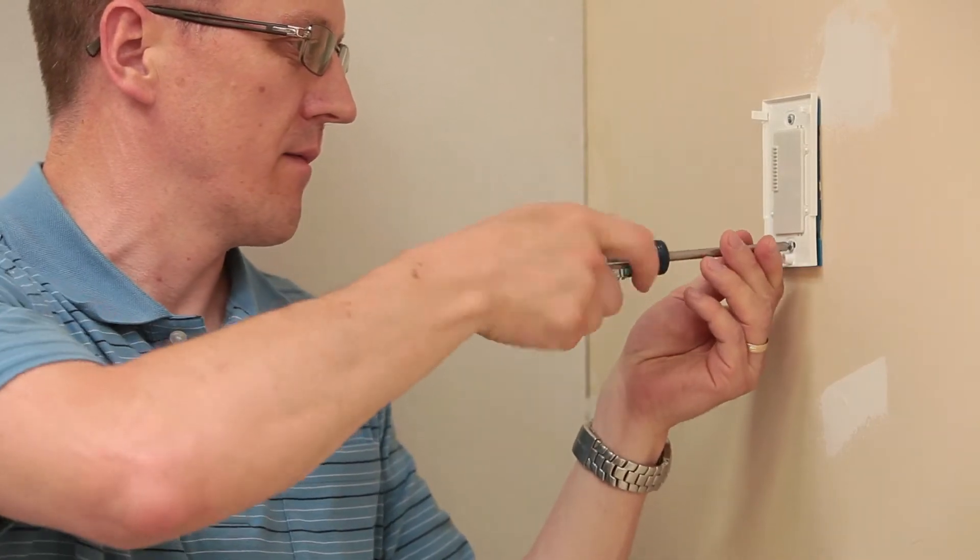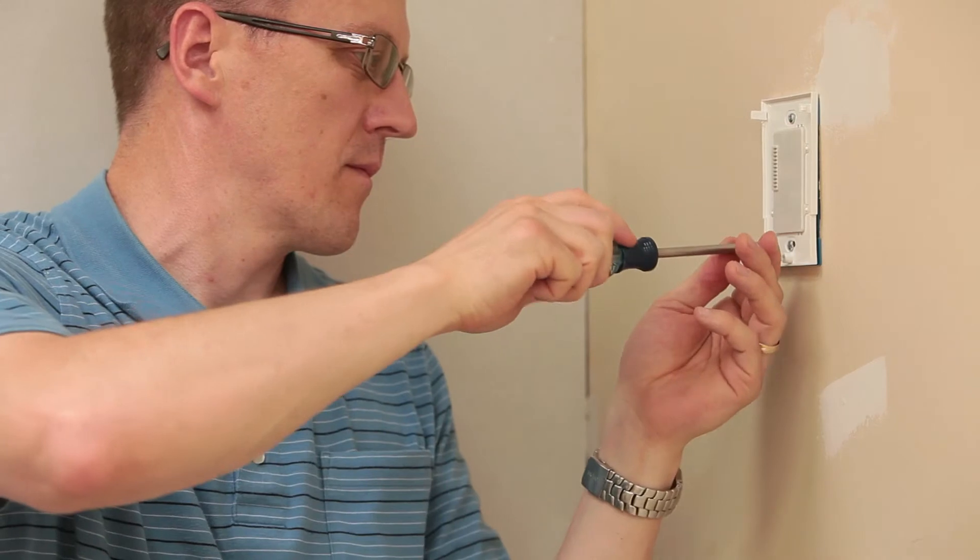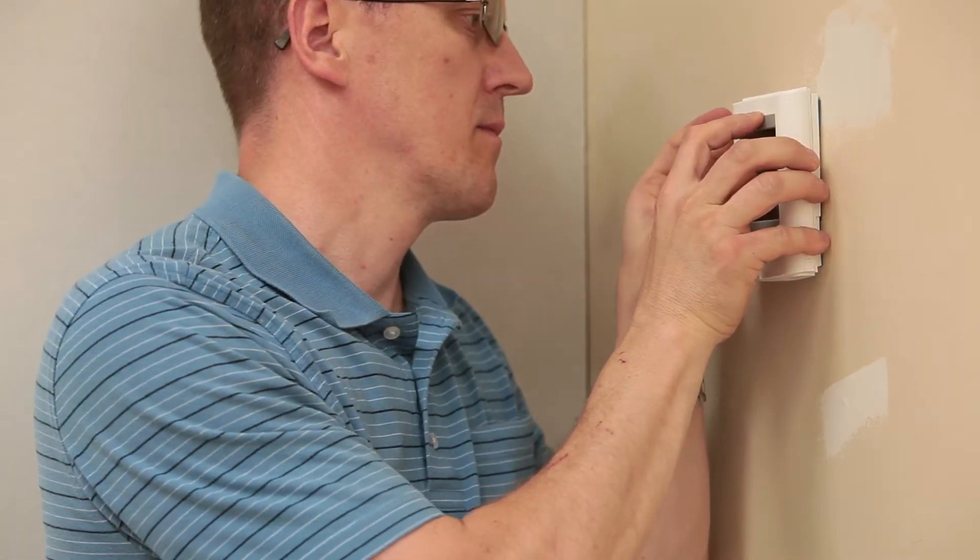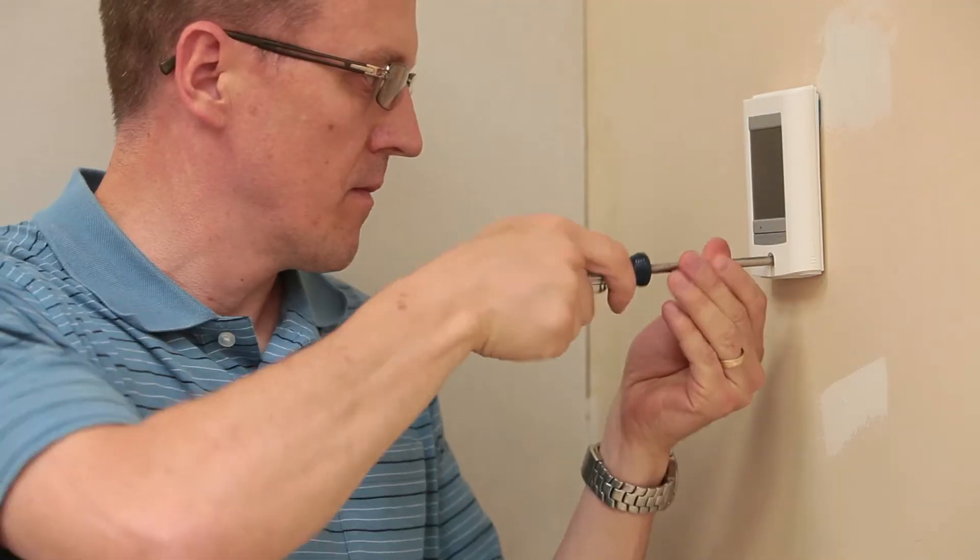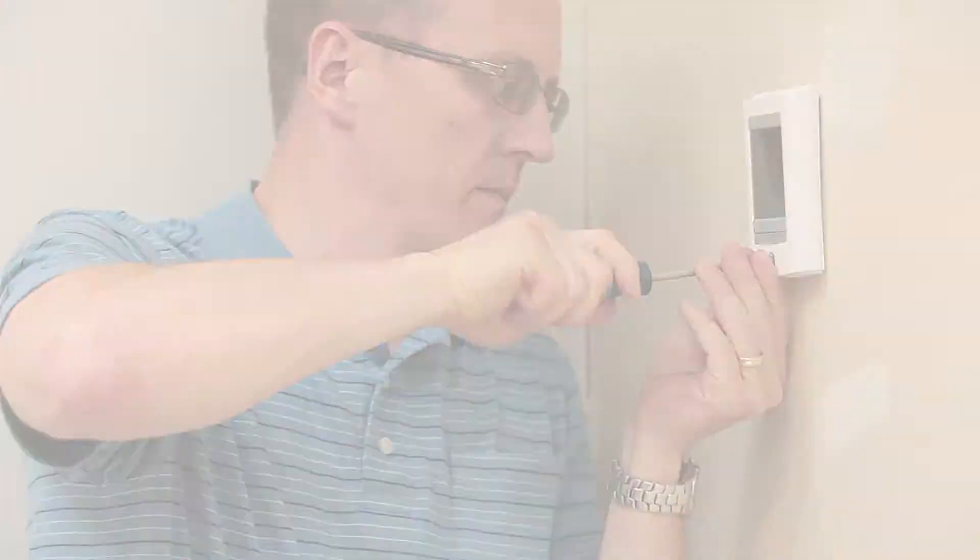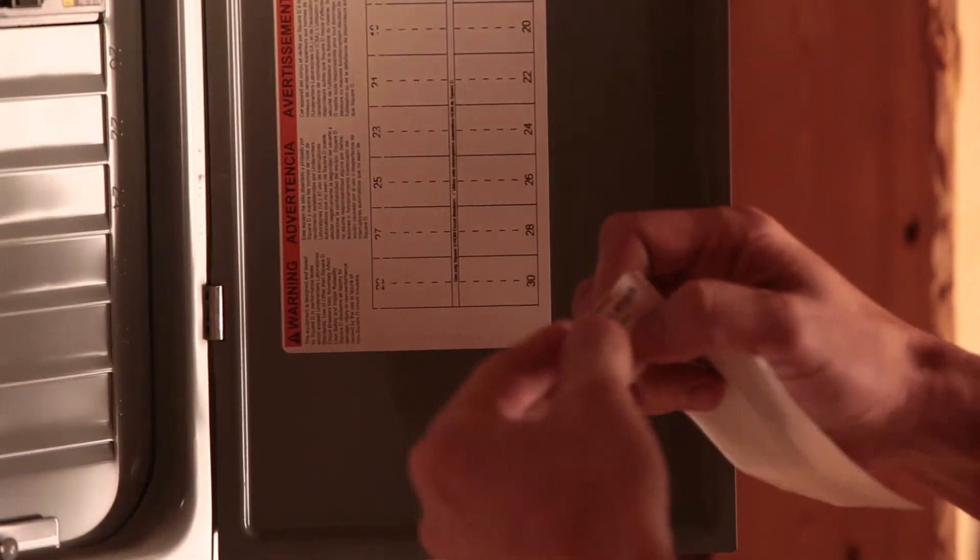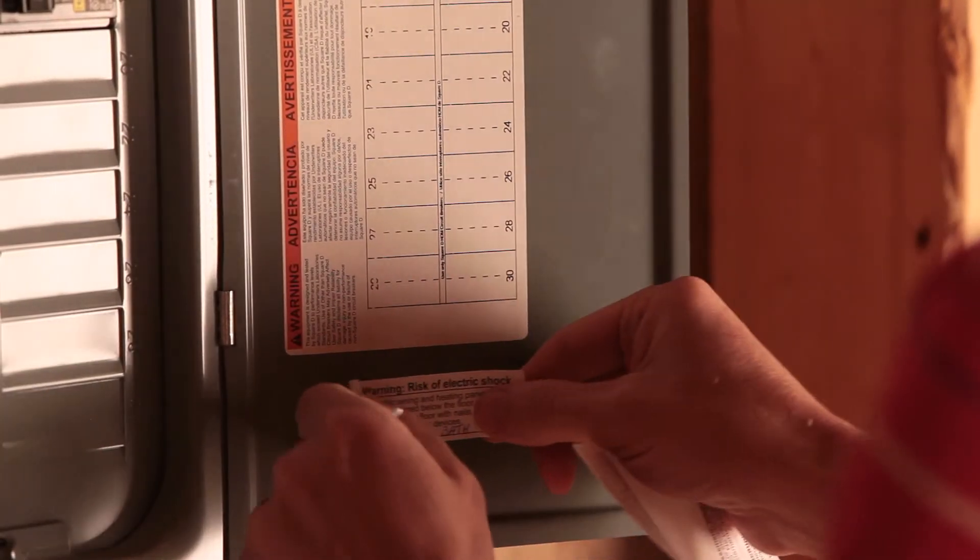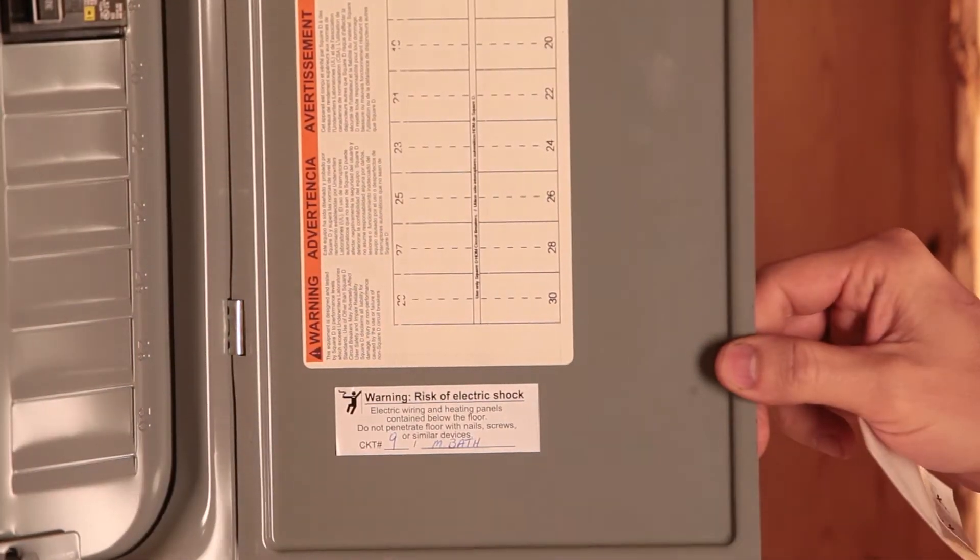Secure the base to the electrical box with the mounting screws provided with the SunStat. Install the thermostat cover. Use the label provided with the SunTouch installation instructions to help indicate which circuit breaker protects the SunStat control and floor warming system.